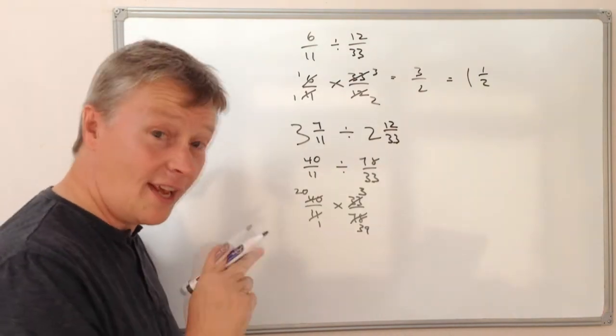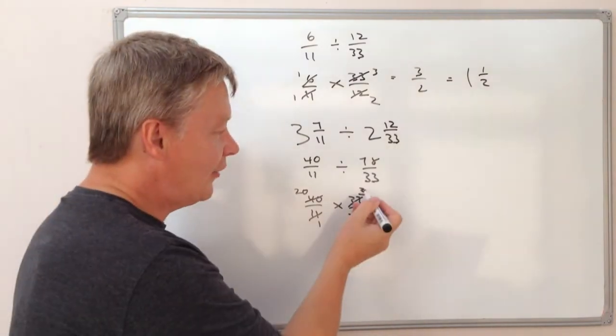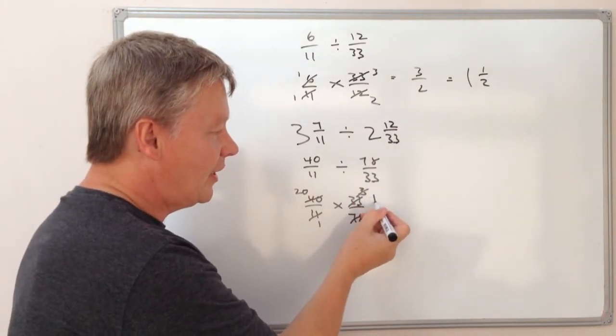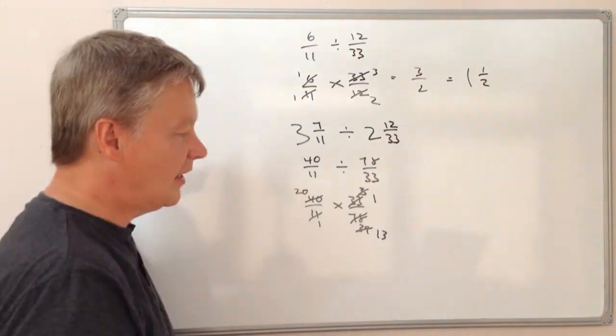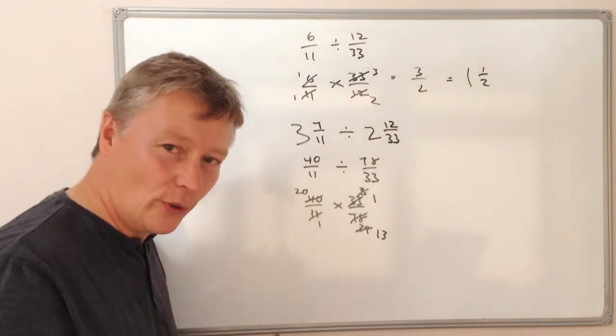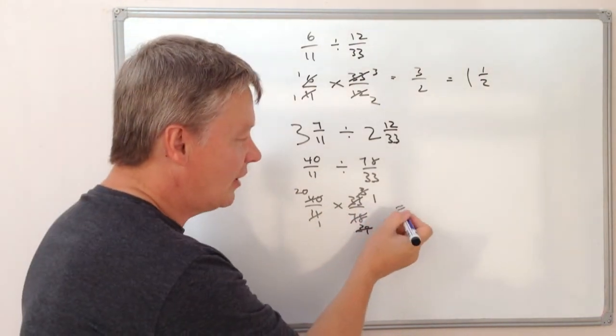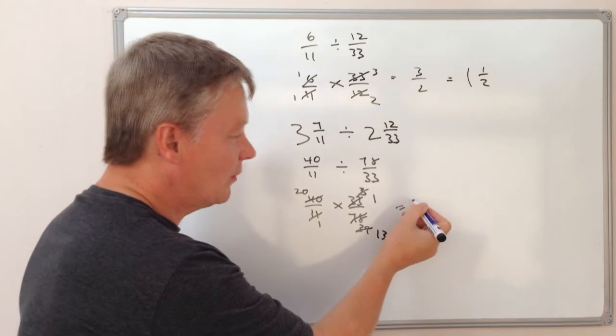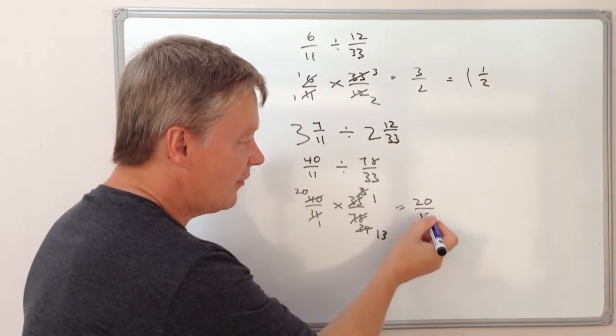Actually that's pretty good because now what I can do is reduce even further. And if I divide that 3 by 3 I get 1, divide that by 3 I get 13. So my direct equivalent fraction to all of this calculation is going to be 20 times 1 which is 20 and 1 times 13 which is 13.